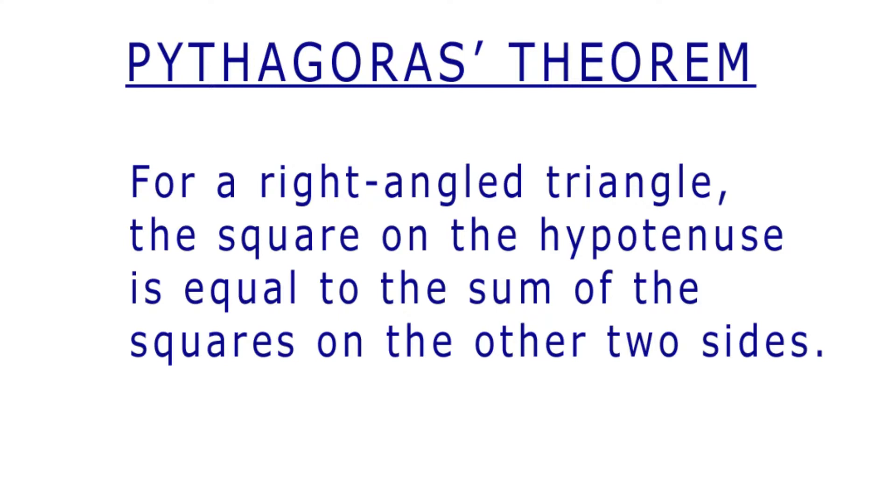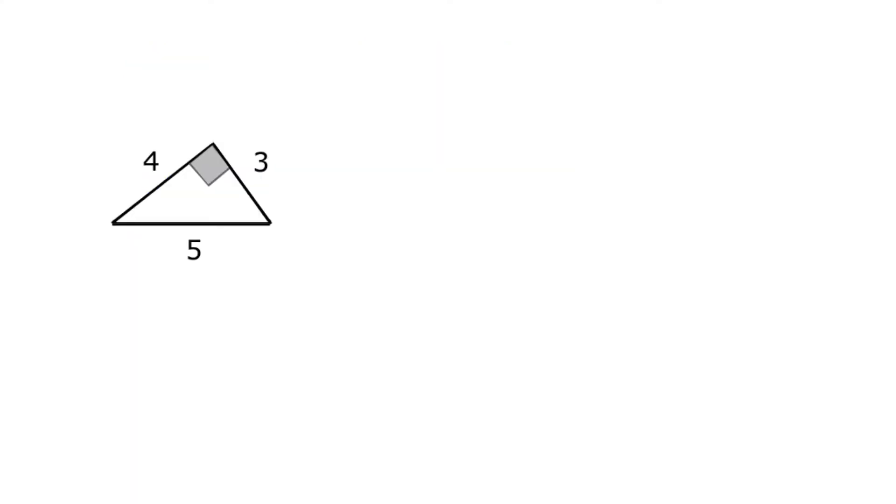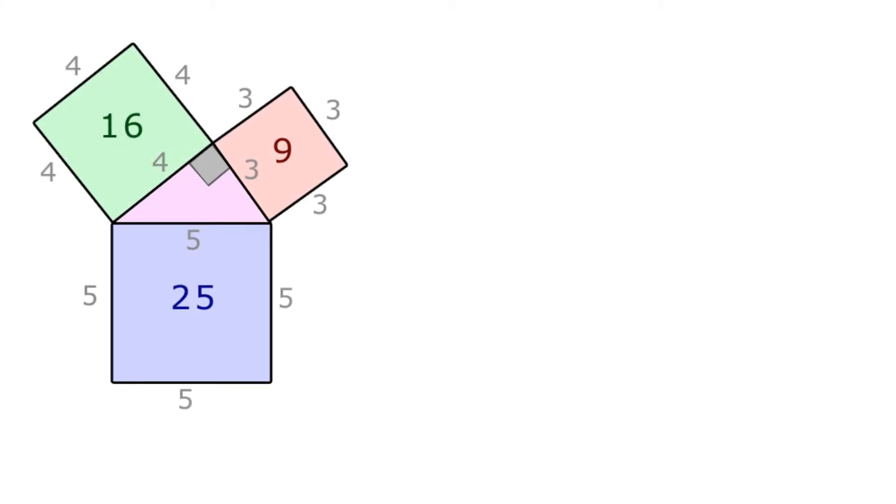But we can visualise it quite easily with this graphic. Here is a 3, 4, 5 right angle triangle. Now if we draw a square on each side, 3 squared plus 4 squared is equal to 5 squared. In other words, 9 plus 16 equals 25.